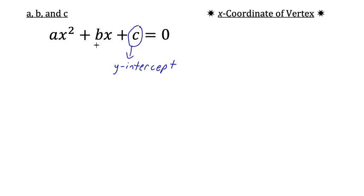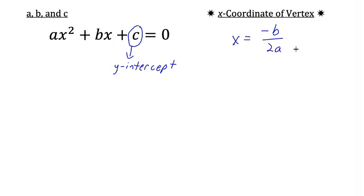What is helpful when working with equations in standard form is that we can easily calculate the x-coordinate of the vertex. Here's a little formula we can use: x equals negative b over 2a, or the opposite of b over 2 times a. This will be a good one to know — x equals negative b over 2a, where x is the x-coordinate of the vertex.